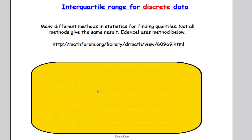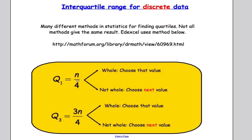For discrete data, to find the lower quartile, take the number of values in the data set and divide by four. If you get a whole number, choose that value; if not, choose the next value up — round up. For the upper quartile, do three times the number of values divided by four. Again, if it's a whole number choose that value, if not round up to the next value.